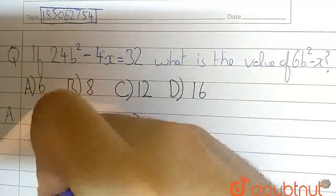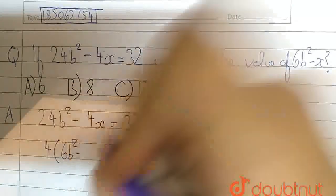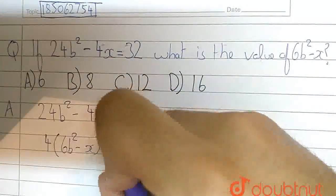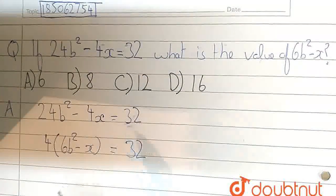So, if we take common 4, we will get 6b² - x. This is actually what we have to find out.